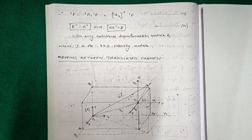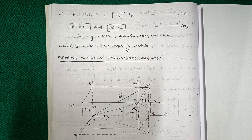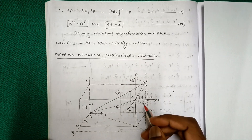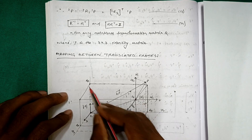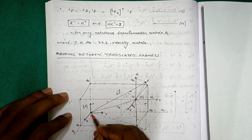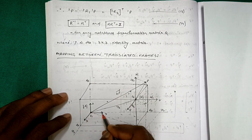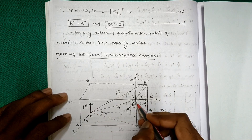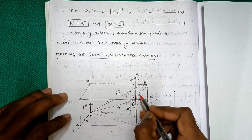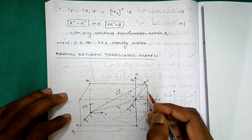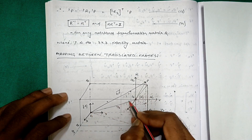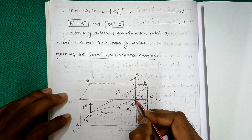Welcome to this lecture. In the previous class we have seen mapping between rotated frames. In this lecture we will see mapping between translated frames. Here we have a rectangular space where O1 is the origin of frame 1 and O2 is the origin of frame 2. The axes x, y, z are the principal axes of frame 1, and u, v, w are the principal axes of frame 2.